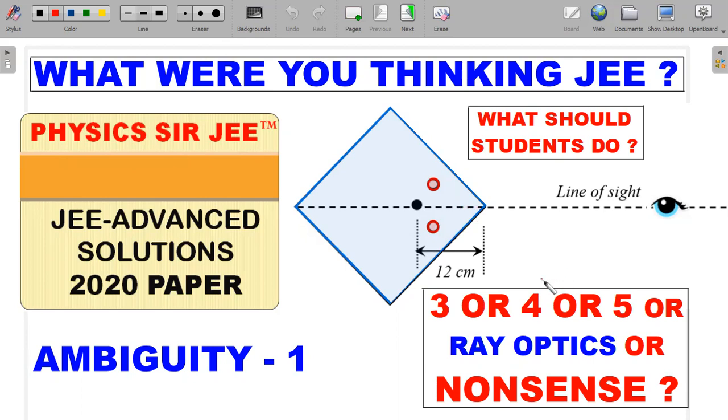I call it Ambiguity-1 because the 2020 paper, as far as I'm concerned, is an overrated paper. It's not tough, it's just weird, and there are many ambiguities which I'll try to bring forward as we go along for JEE Advanced 2021.